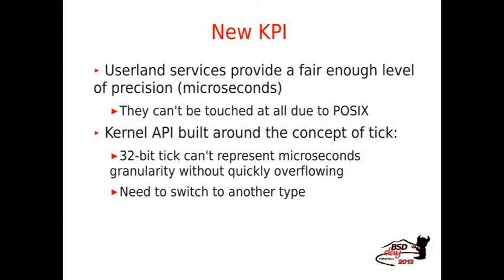As I explained, the user bound services provide a fair enough level of precision, microseconds. And in any case, they cannot be touched at all because they are standardized by POSIX. If you change the system calls that deal with timers, you automatically lose POSIX compliance. On the other hand, all the kernel API is built around the concept of periods and of ticks. 32-bit type is too small to represent microsecond granularity without quickly overflowing. There is a need to switch to another data type that is more capable of representing this precision.